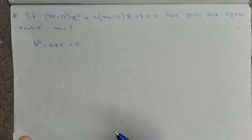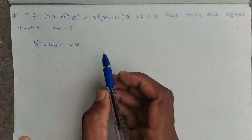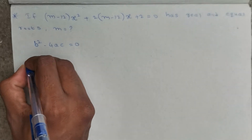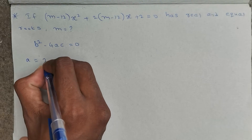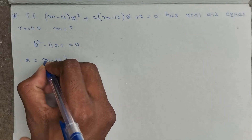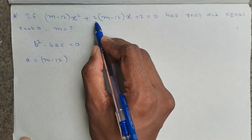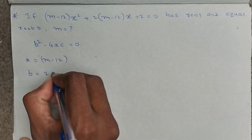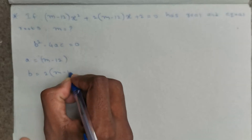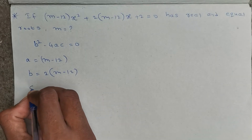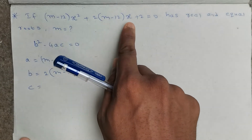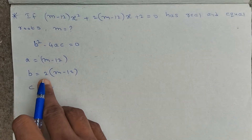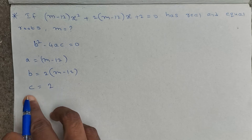First, let us identify the values of a, b, and c in the given equation. The x² coefficient is (m minus 12), so a equals m minus 12. The x coefficient is 2(m minus 12), so b equals 2(m minus 12). The constant is 2, so c equals 2.